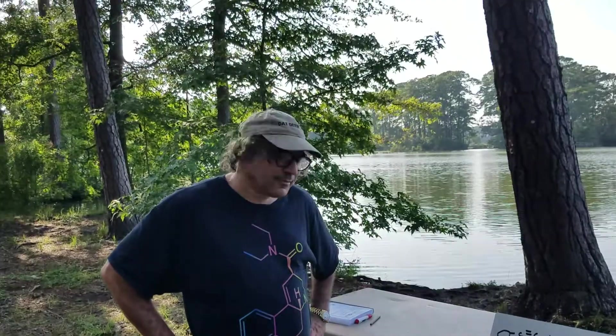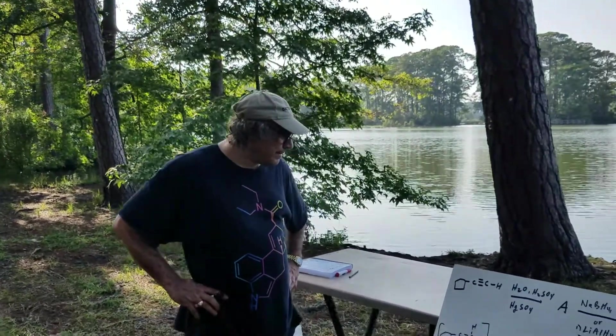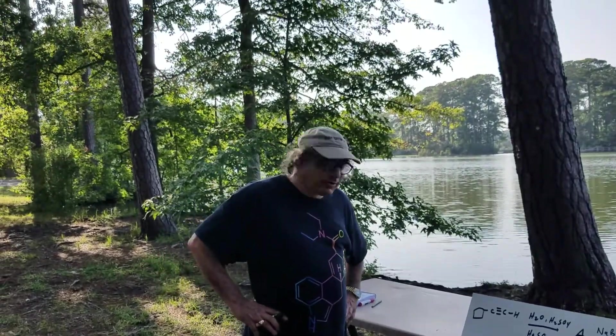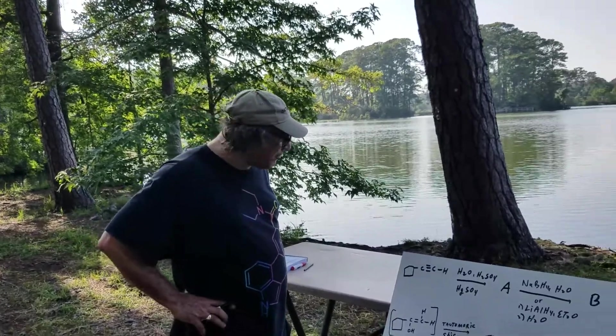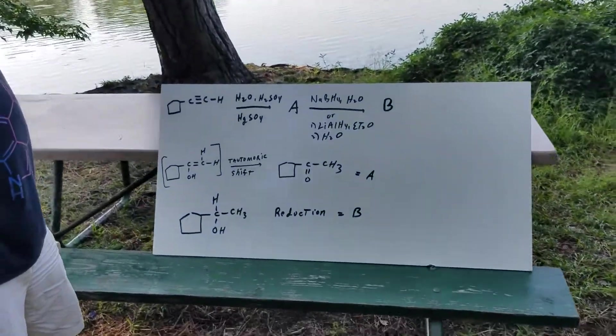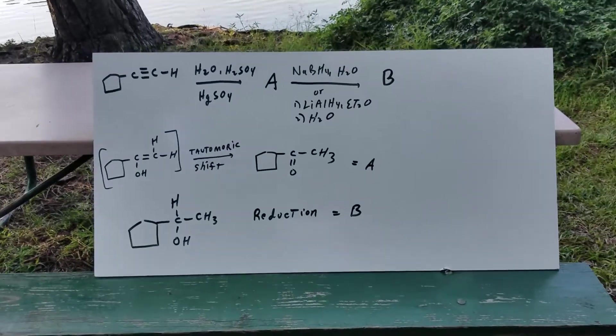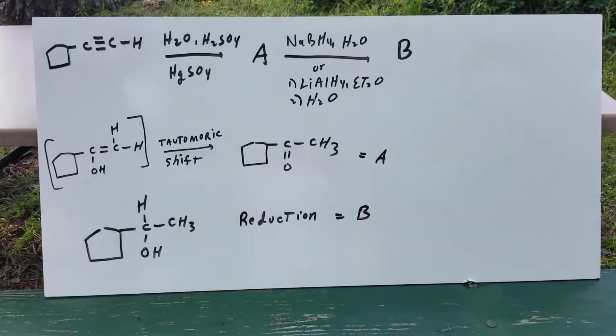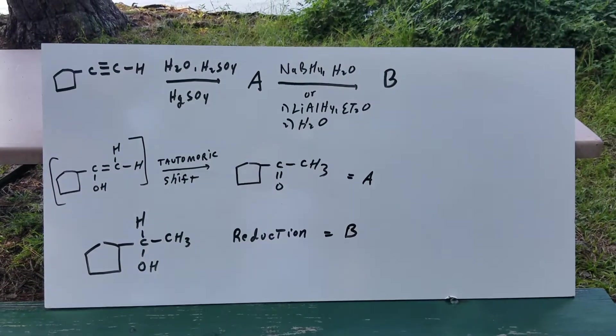That's a Diels-Alder, correct? Absolutely not. Where do you see a six-membered ring, my friend? There's no six-membered ring even here. Let me take a look again. Hold on, hold. Oh, I guess you're right.